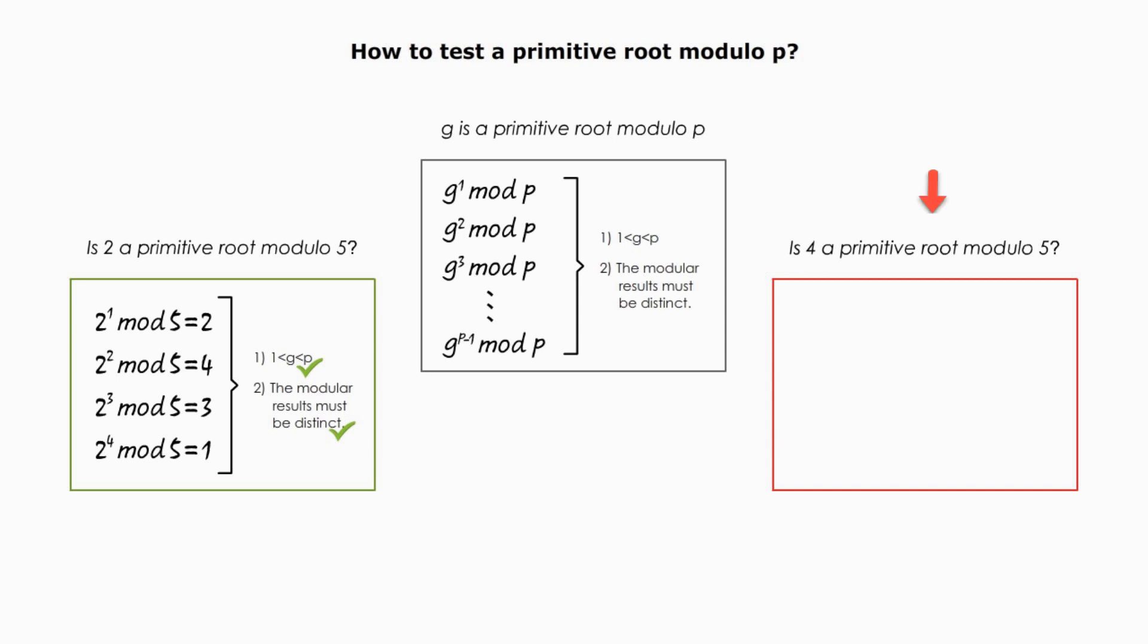Let me test if 4 is a primitive root modular 5. 4 modulo 5 is 4. 4 to the second power is 16, and 16 modulo 5 is 1. 4 to the third power is 64, and 64 modulo 5 is 4.